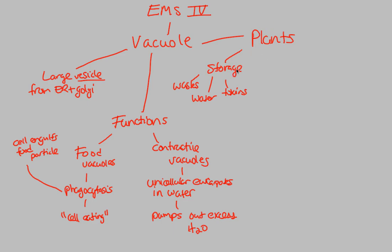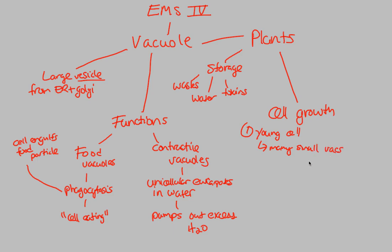Plants use vacuoles for great amounts of storage. Vacuoles are also the reason that cell growth happens in plants. A young plant cell will actually have many small vacuoles. Those small vacuoles eventually coalesce — meaning they combine and join together — becoming one cohesive structure. That eventually creates what is known as a central vacuole.